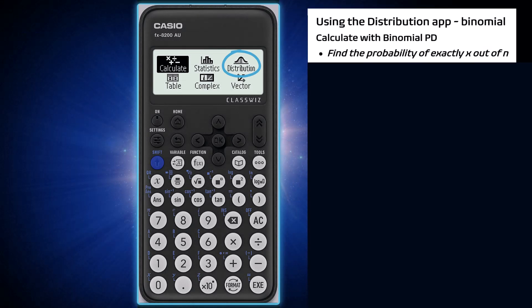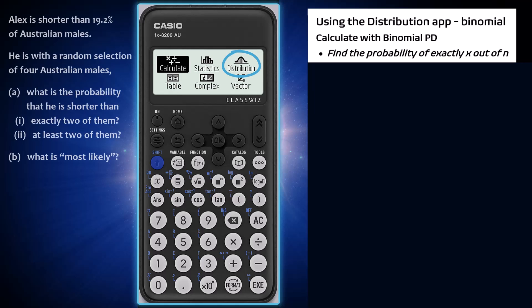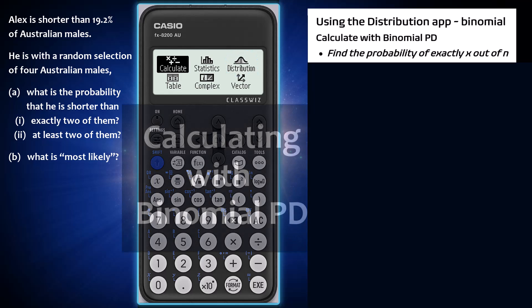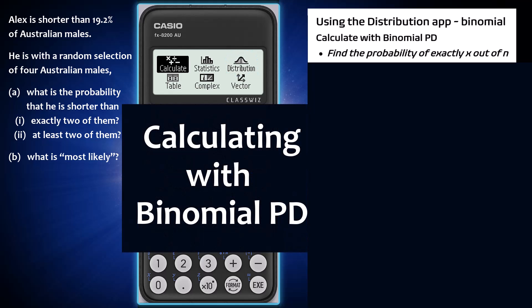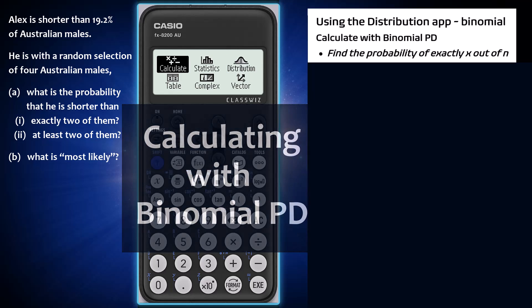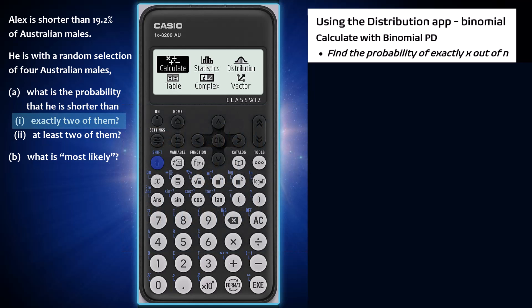The distribution app of the Casio FX-8200AU can be used to perform a range of calculations involving binomial distributions. One such calculation is the probability of two successes in four trials if the probability of success in a single trial is equal to 0.192, which is the calculation required in part A, question one.